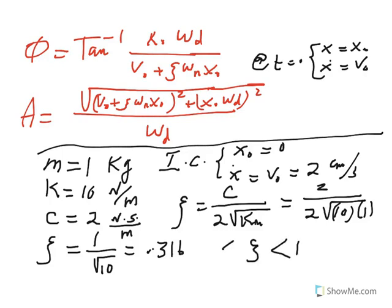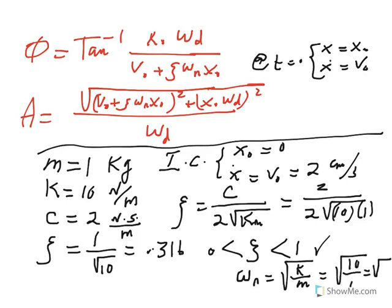Since ζ ≈ 0.316, it is between 0 and 1, confirming the underdamped case. Next, we find ωn = √(k/m) = √(10/1) = √10 radians per second. Note that ζ is dimensionless. Now that we have confirmed the system is underdamped and found ωn, we need to find the constants A and φ.